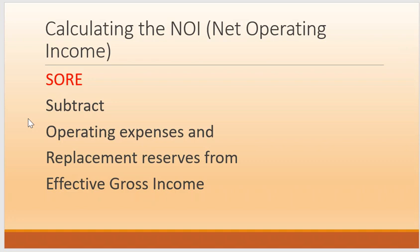The NOI analyzes the potential income from real estate investments. Remember that effective gross income is adjusted for property vacancies, while gross income does not. I've seen a lot of different types of these questions in the math practice exams, so this is a great way to remember it. Simply just remember SOAR — subtract those operating expenses and replacement reserves from the effective gross income.